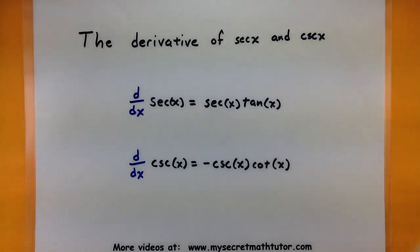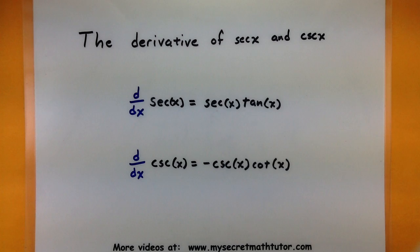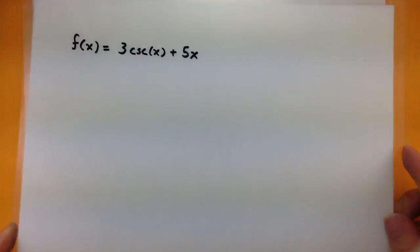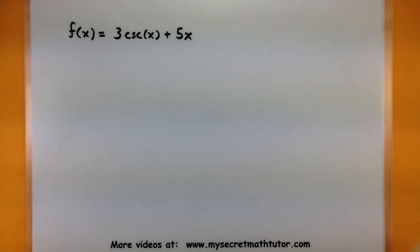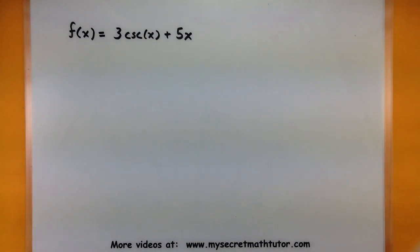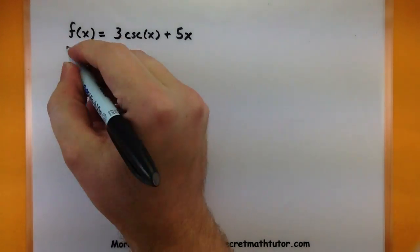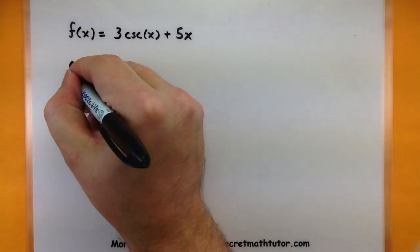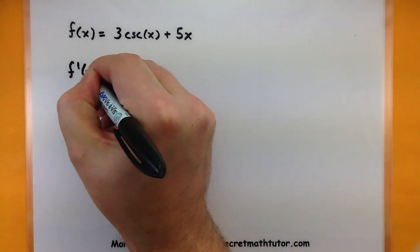We're going to play around with these two derivative rules and get a little bit more practice with them. We'll first do this example: our function is 3 multiplied by cosecant of x plus 5x, and we want to know what is its derivative.